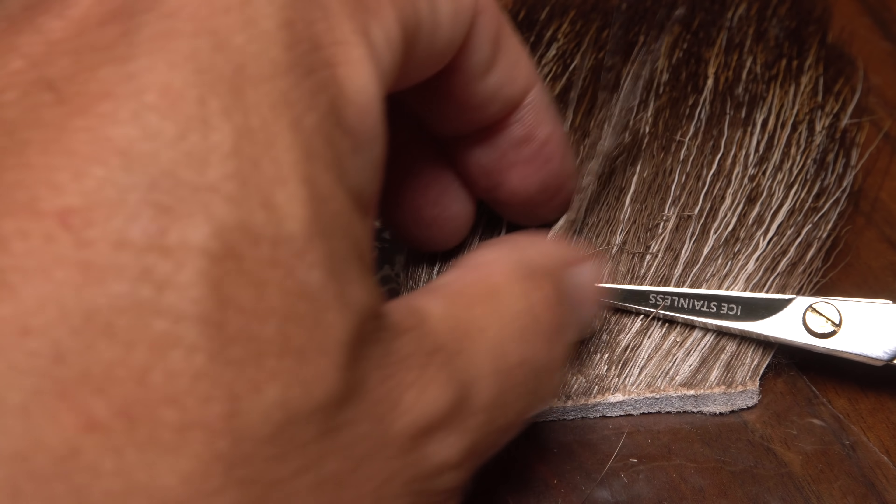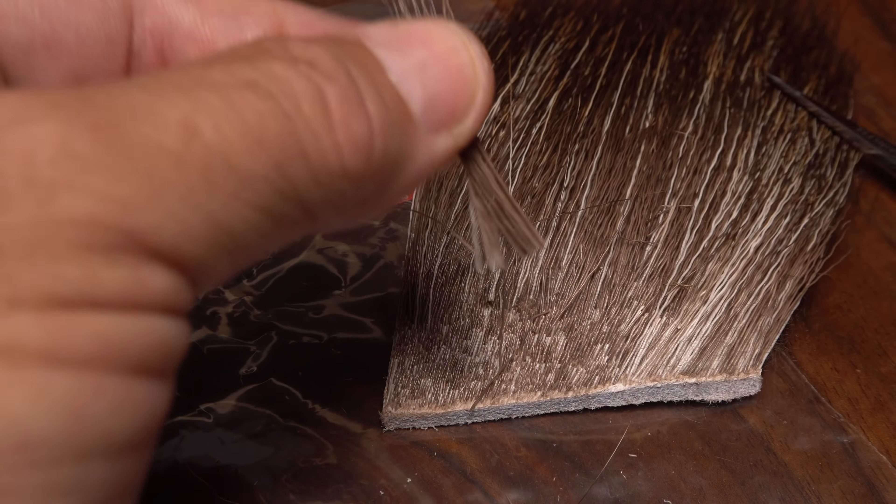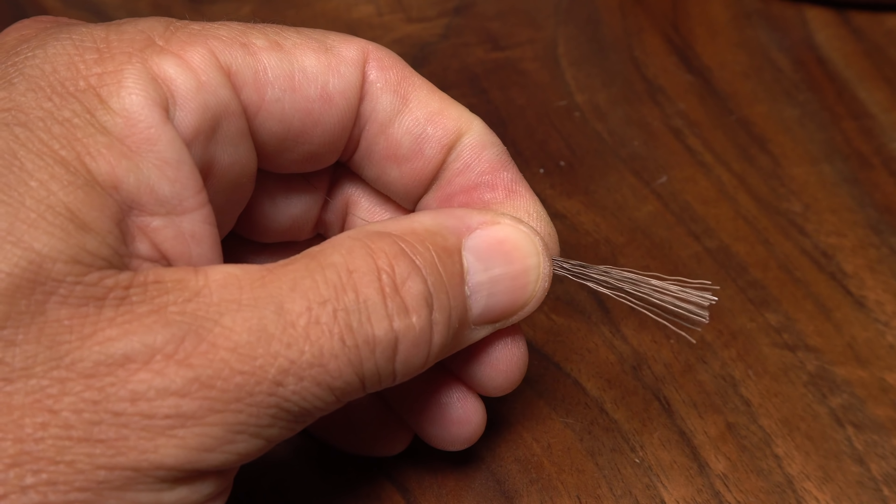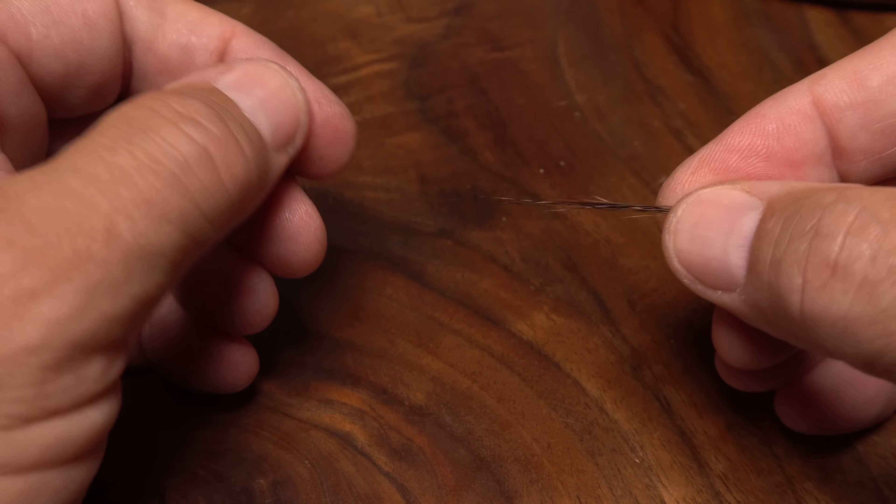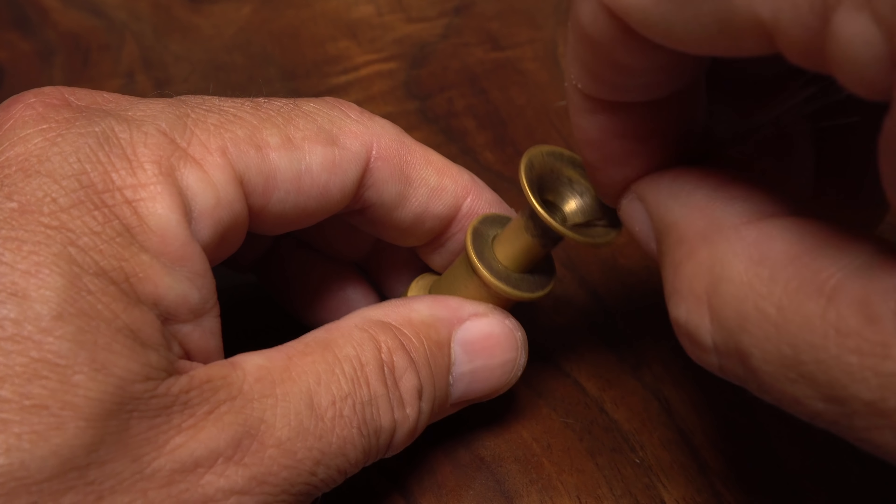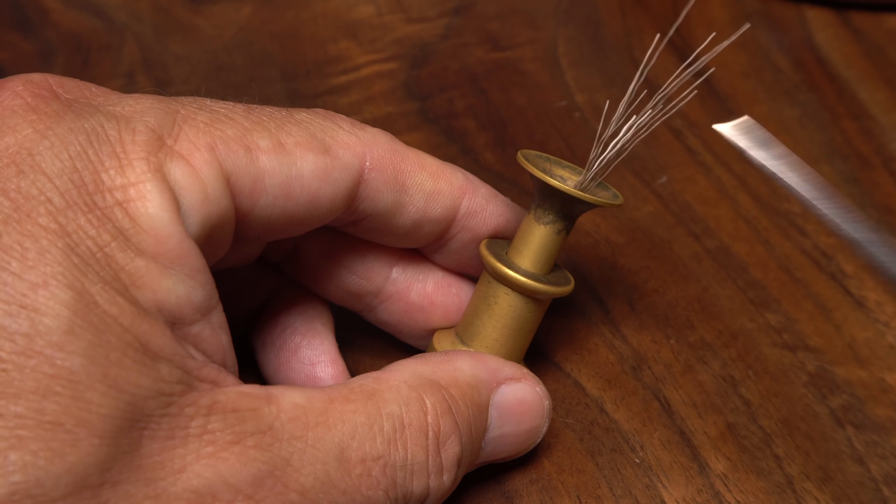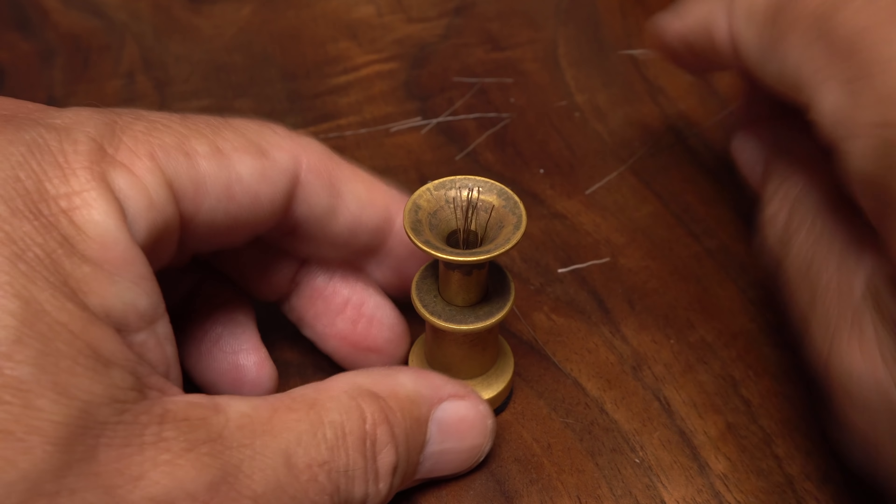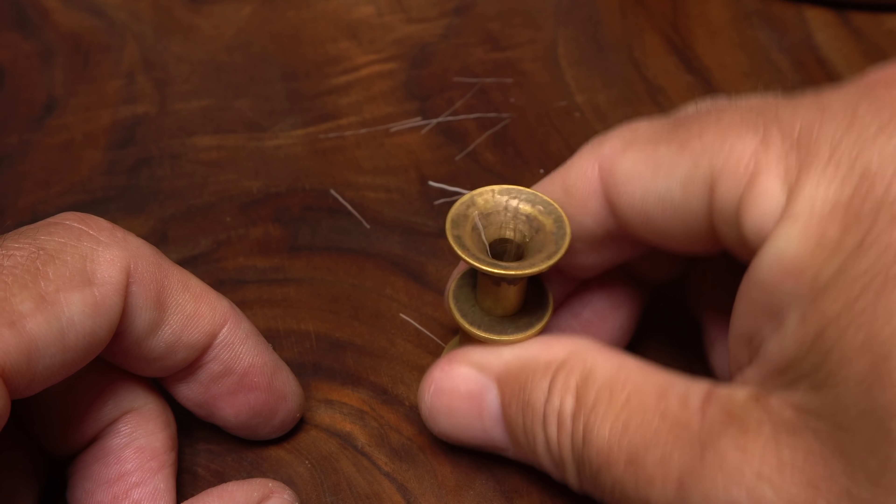Moose body hair is used for the tail of the fly. Snip a small clump free from the hide and strip out any shorter hairs or those that are exceedingly long. Place the hair tips first into a stacker and give them a good stacking. I like to trim the excess butt ends off even with the top of the stacker, then give it another wrap or two.